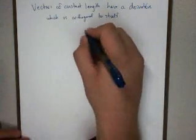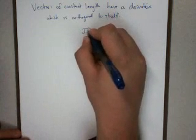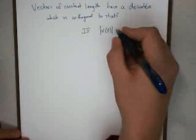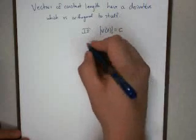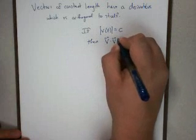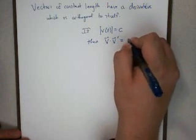Notationally, if you take a vector-valued function and the length of every single one of those vectors is a constant, then the function and its derivative are orthogonal.